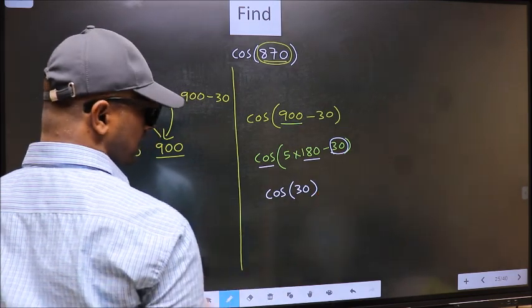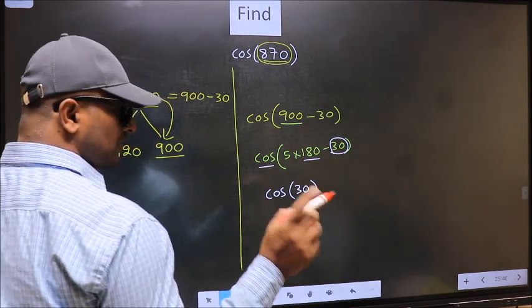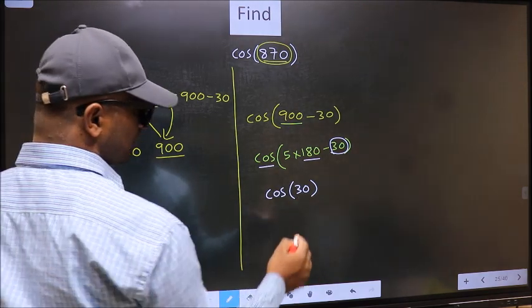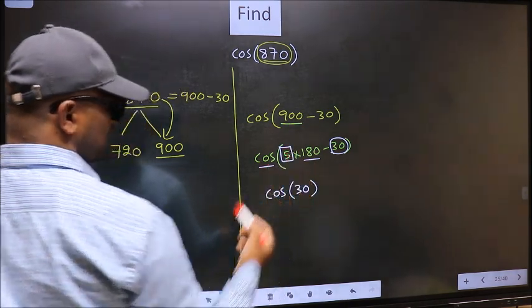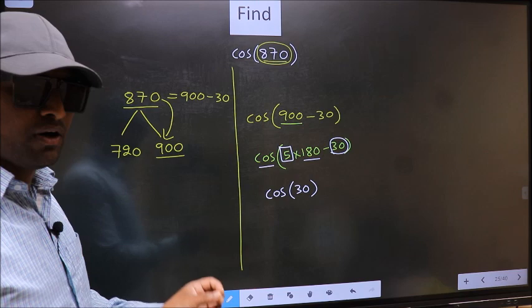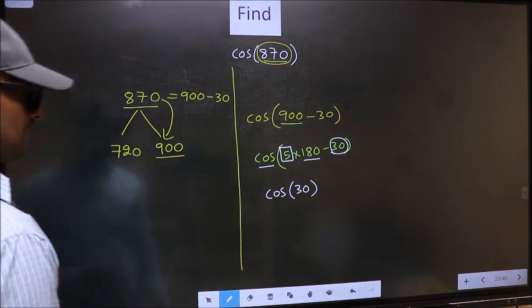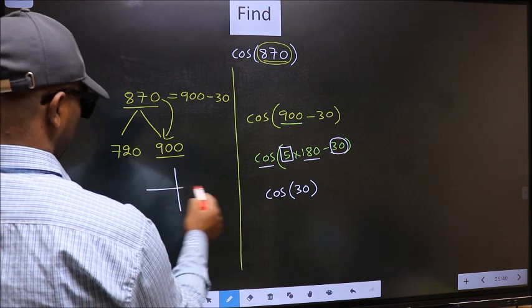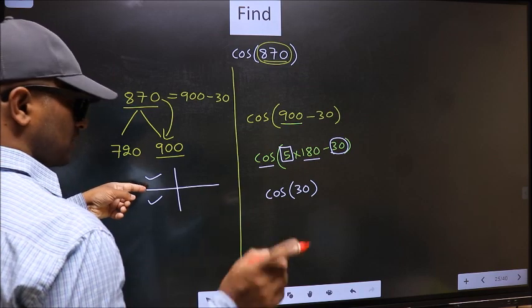Now, the question is, will we get here plus or minus? To answer that, we should look at the number before 180. That is 5, and 5 is odd. And all the odd multiples of 180 lie either in the second or in the third quadrant.